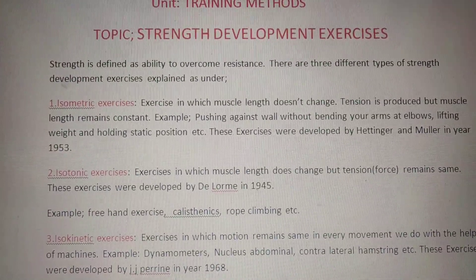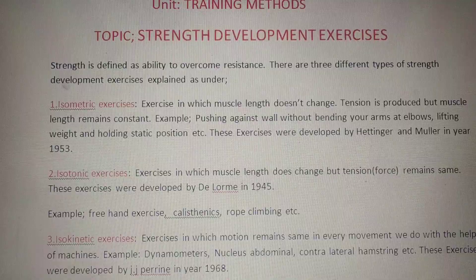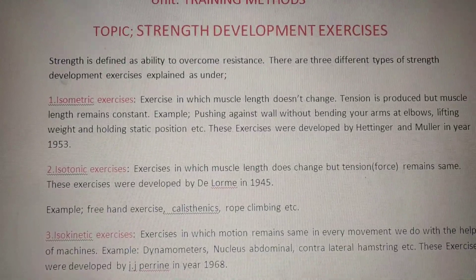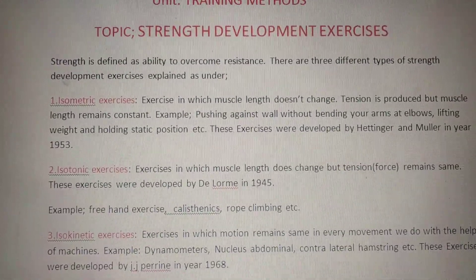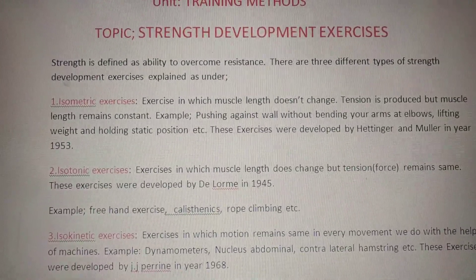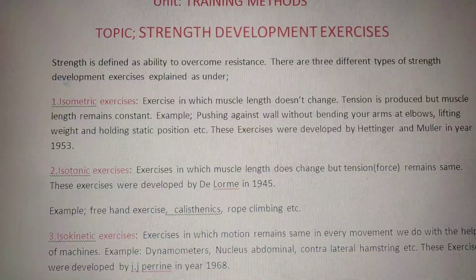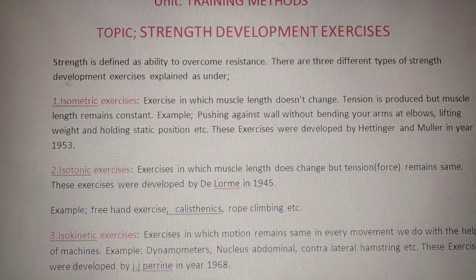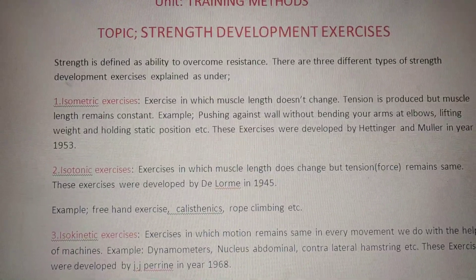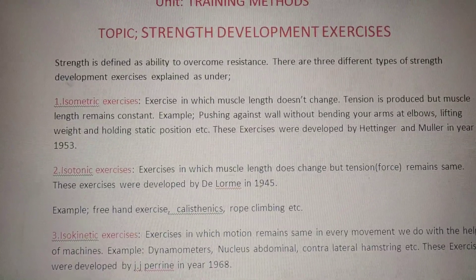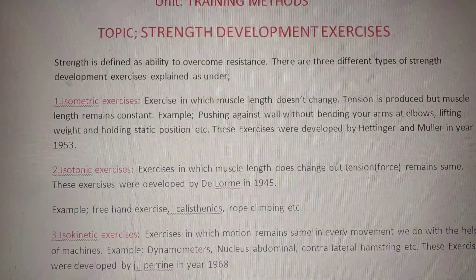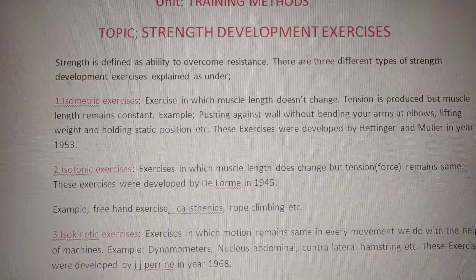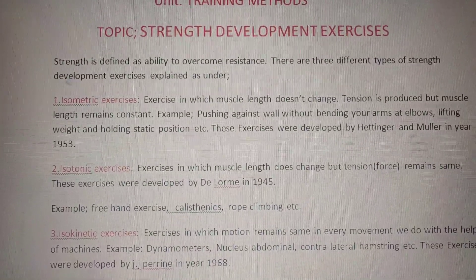Typical examples of isometric exercises are pushing against a wall without bending your arms at the elbows, common left, lifting weight and holding a static position, etc. These exercises were developed by Hittinger and Muller in the year 1953.